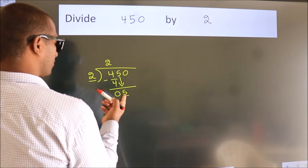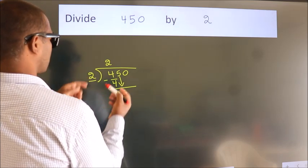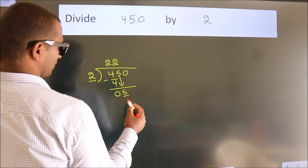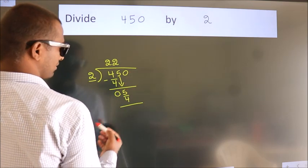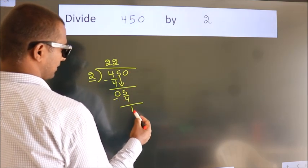A number close to 5 in 2 table is 2 2s, 4. Now we subtract. We get 1.